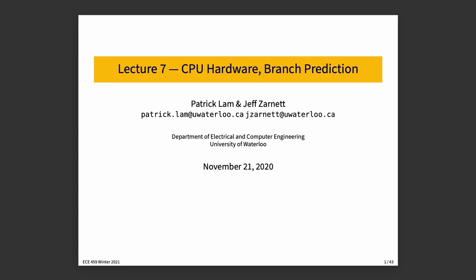Lecture seven: CPU hardware and branch prediction. We talked a little bit earlier in the previous topic about how multi-core processors became the norm, partly because clock speeds aren't going up anymore, and partly because this allows us to get more done in parallel. So we're going to discuss a little more detail on this today.